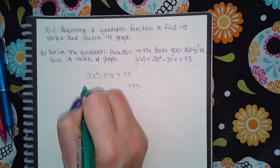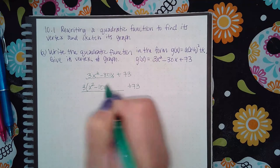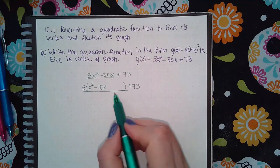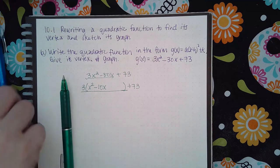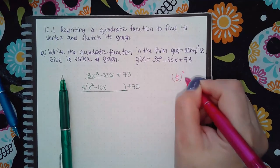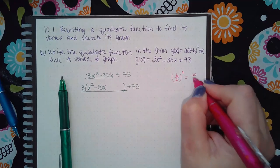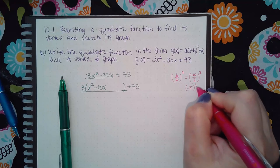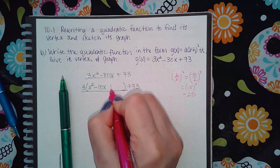When I do that I end up with 3 times x squared minus 10x. Then what I'm going to do is complete that square for what's on the inside here. How do we do that? We take b over 2 and square it. So b in this case is negative 10, and if I put that over 2 I get negative 5 squared, which is 25. So I'm going to add 25 in here.